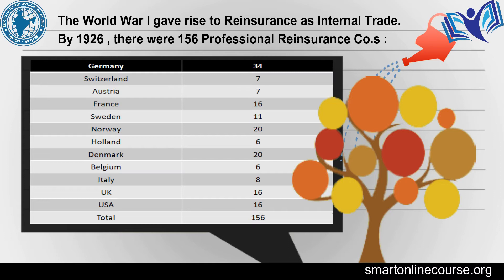Norway, Holland, Denmark, Belgium, Italy, UK, and USA's 16 companies are also included. Because UK, Europe, USA and Europe had all the trade relations of insurance and reinsurance, 156 companies came into existence.